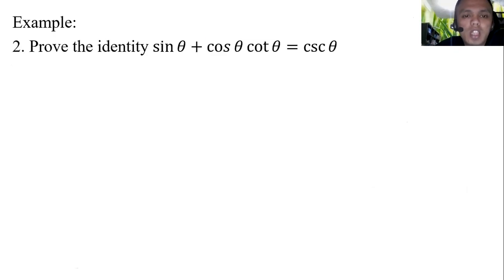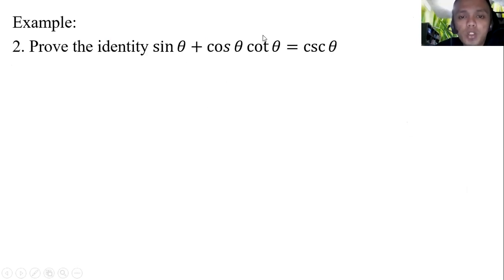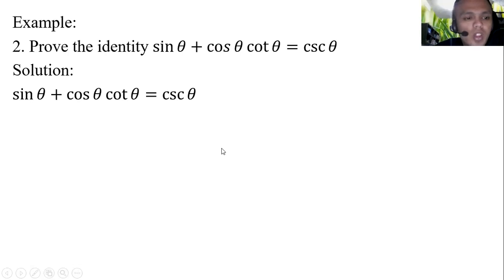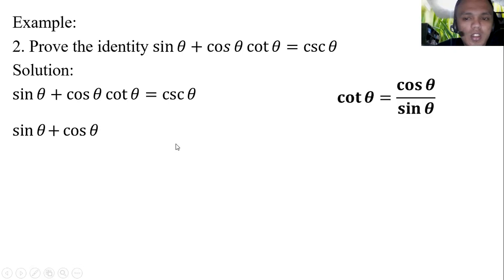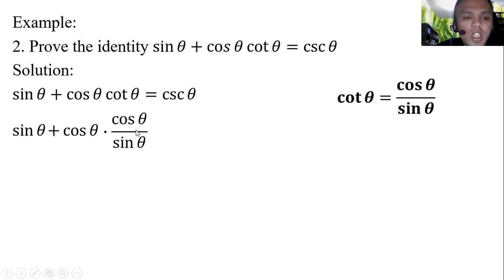Next, prove the identity: sine theta plus cosine theta times cotangent theta equal to cosecant theta. We need to prove that this expression equals cosecant theta. First, change cotangent theta to cosine theta over sine theta. So we have sine theta plus cosine theta times cosine theta over sine theta equal to cosecant theta.